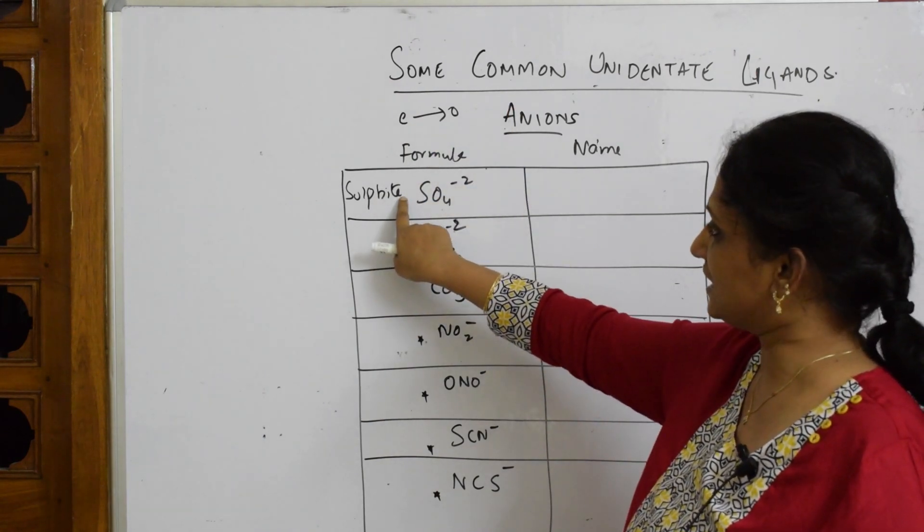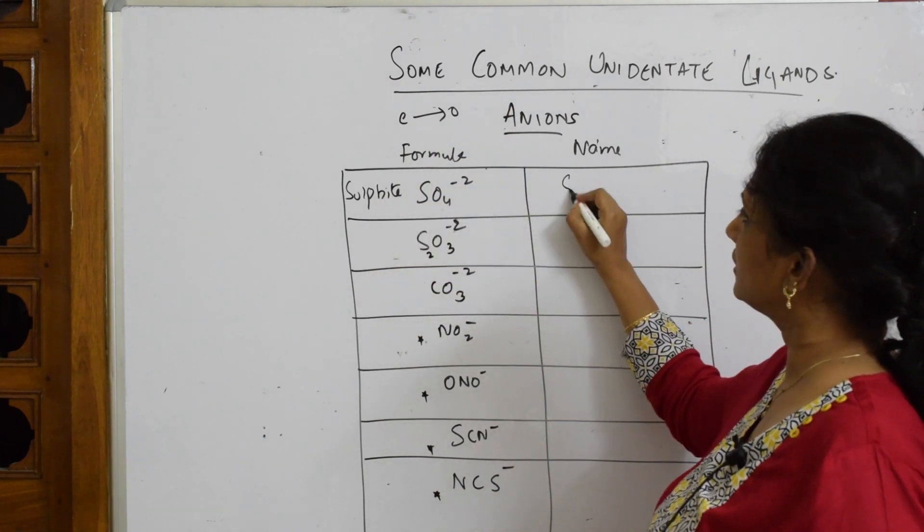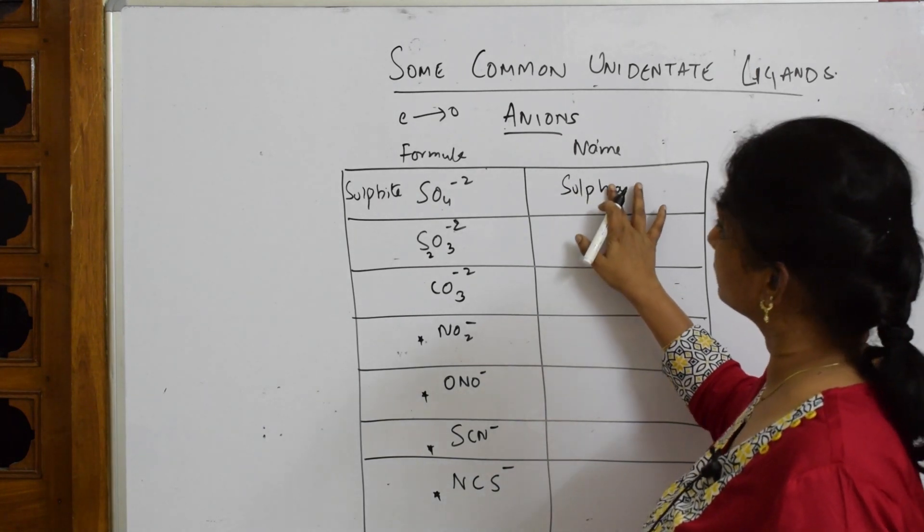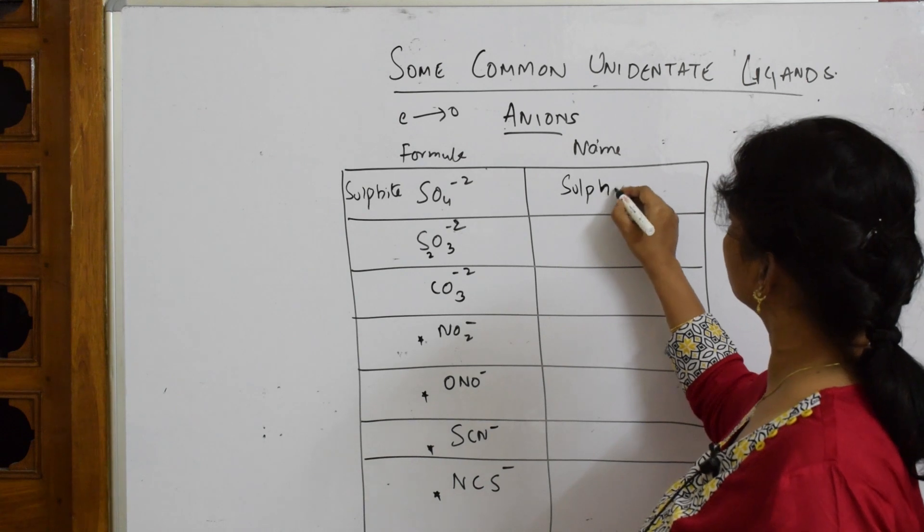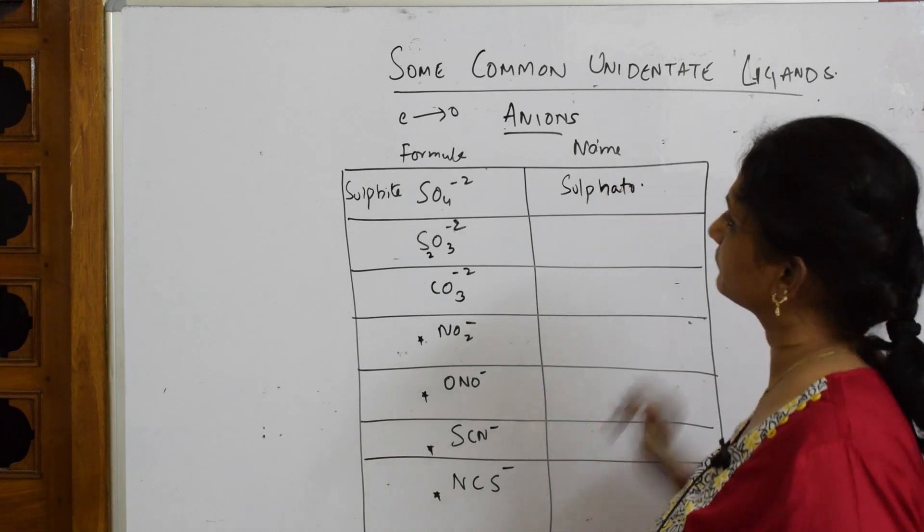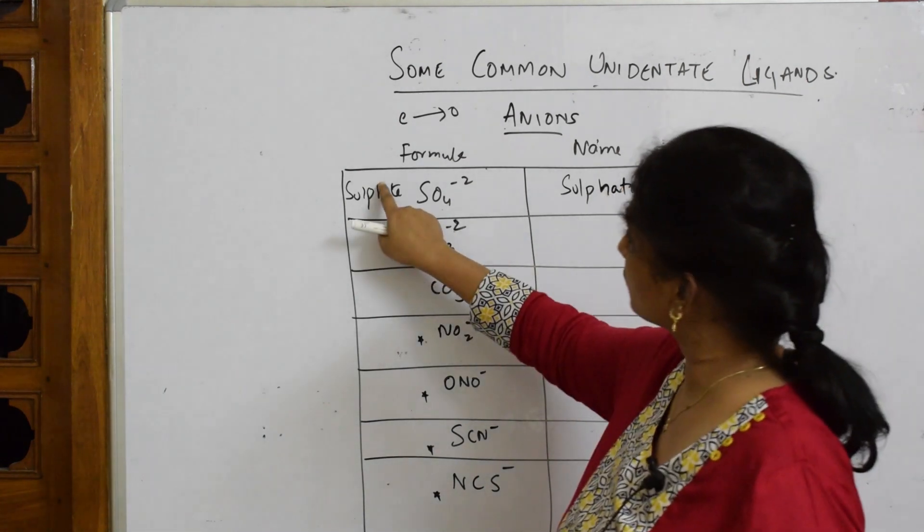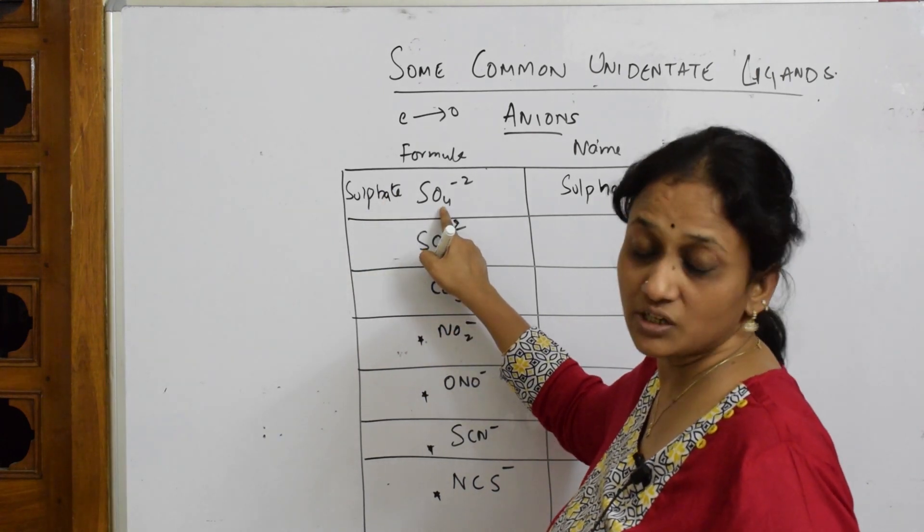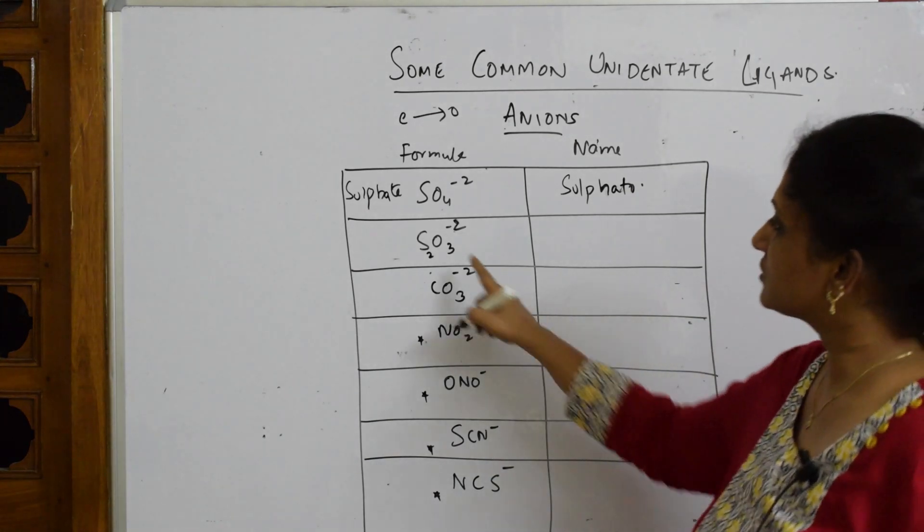This is sulfate, not sulfite - SO₄²⁻, sulfate. So 'sulfato'. Now this is thiosulfite, so you're going to write it as 'thiosulfato'.